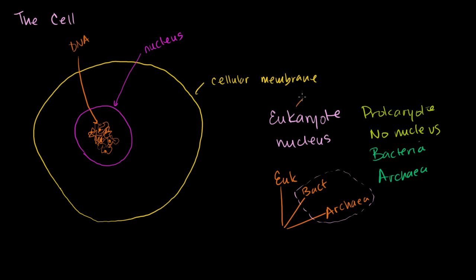Eukaryotes include plants, animals—we're animals—fungi, and other groups, but these are the ones we normally deal with in everyday life. Let's go back to looking at the anatomy of cells.